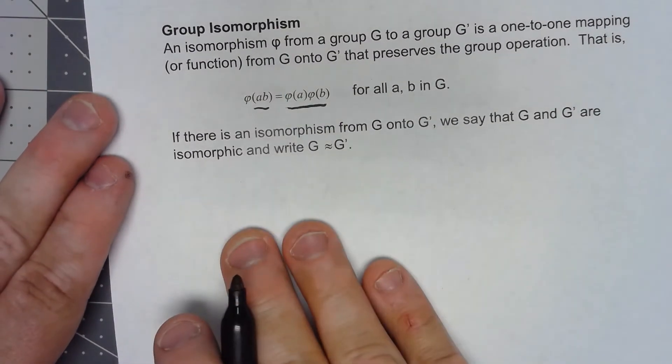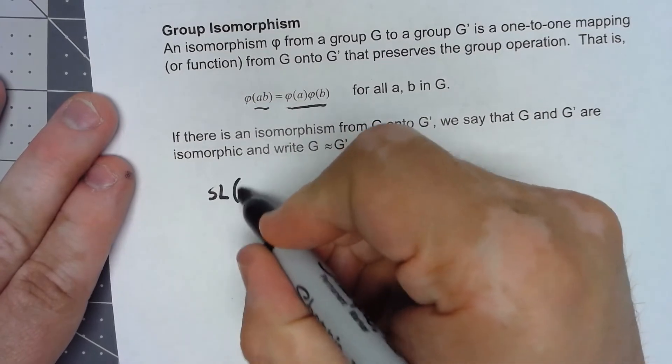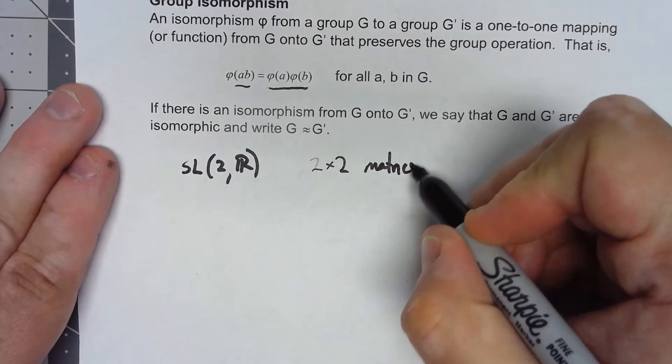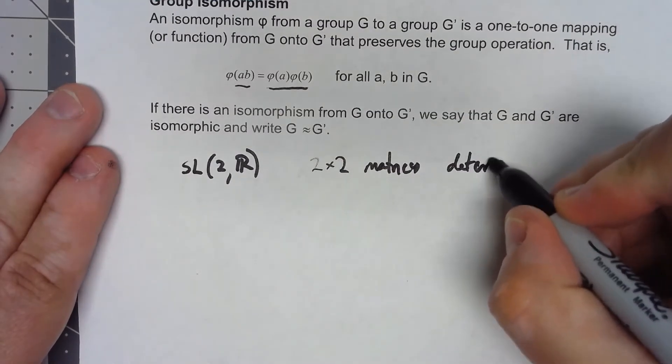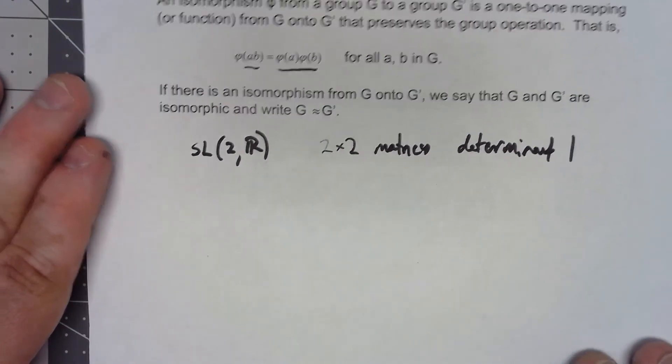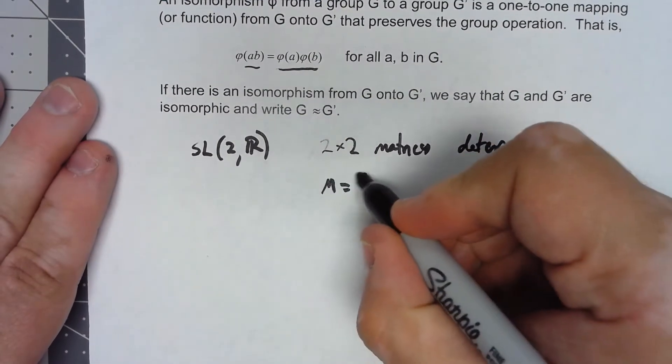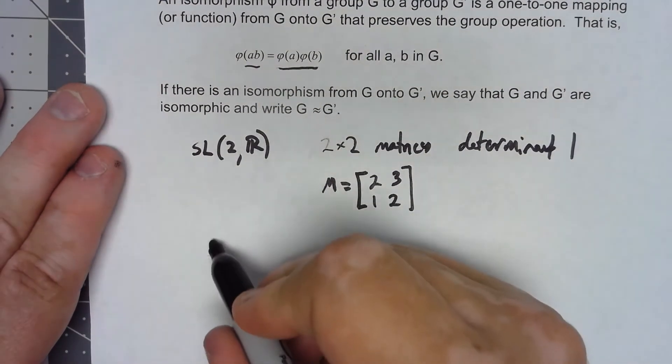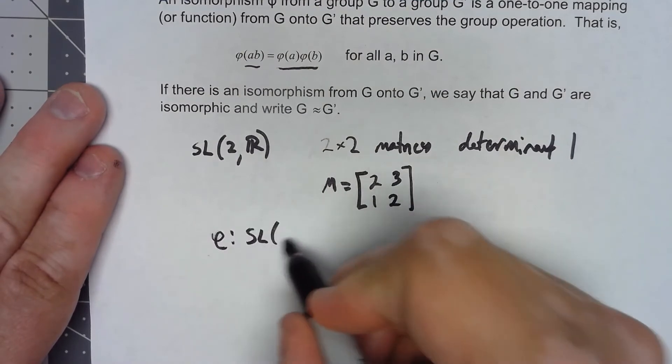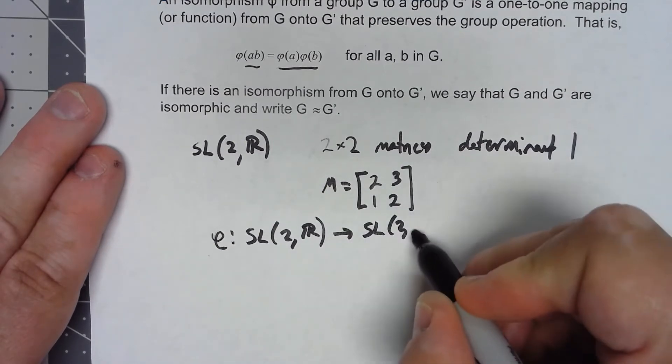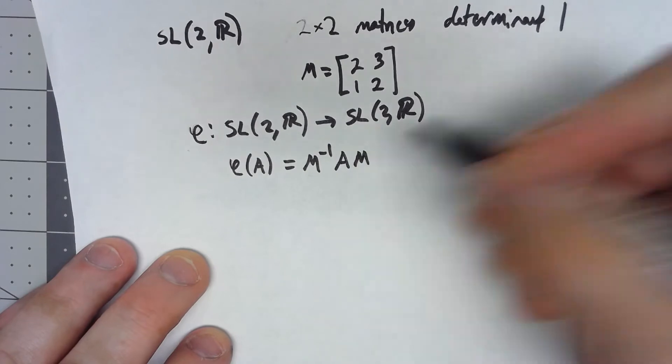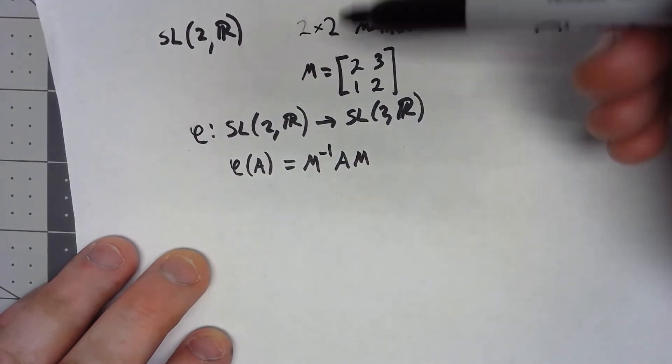Let's do this. So let's say that we're going to look at the group SL(2,R). If you don't remember that notation, that's the set of two-by-two matrices with real values and determinant 1. I'm going to define a matrix M as 2, 3, 1, 2. And my mapping phi is going to take that SL(2,R) into itself, and we're going to define that by phi of a matrix A equals M inverse AM. So I've done the first step, I've defined what my function is, and then I'm going to show that this thing has to be one-to-one.